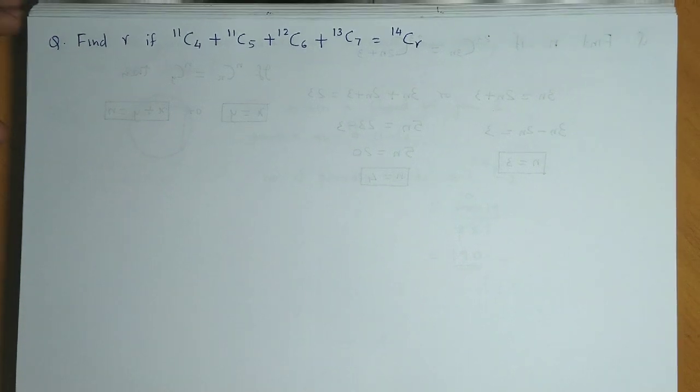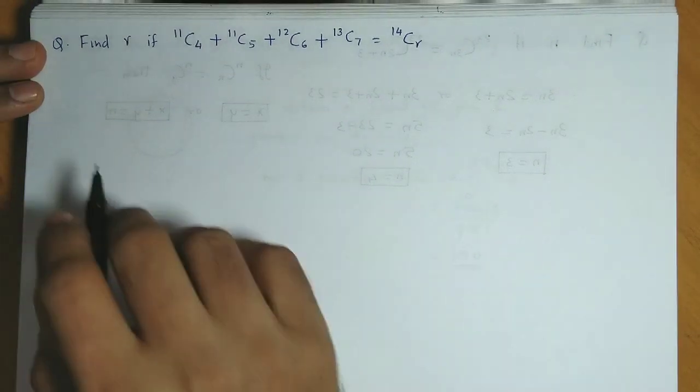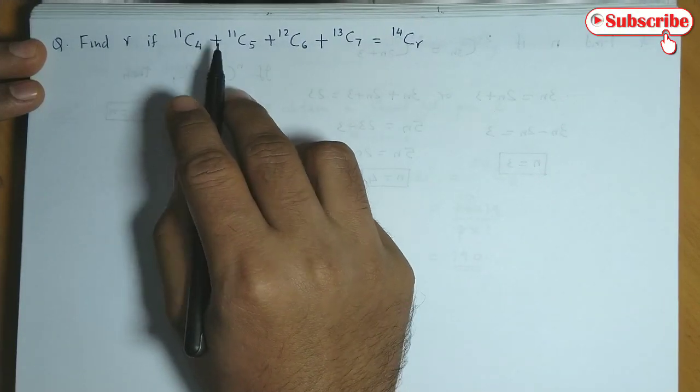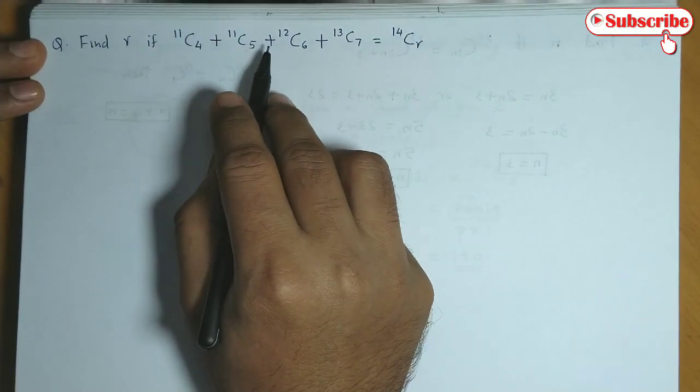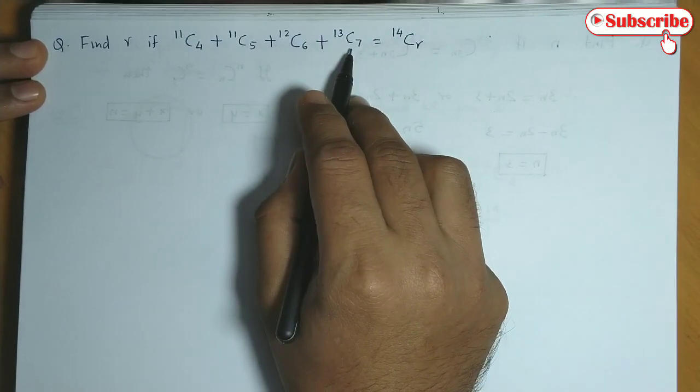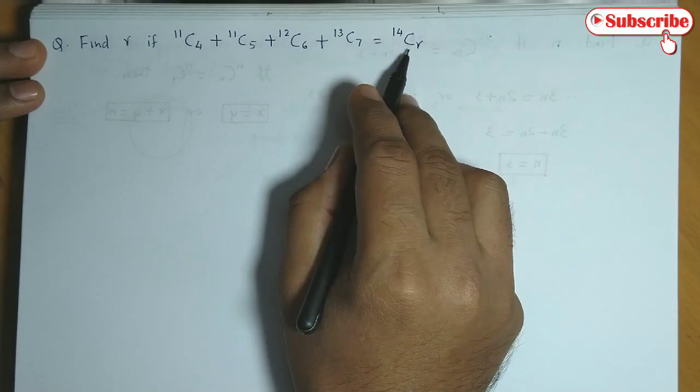We now take an example based on combination. Find R if 11C4 plus 11C5 plus 12C6 plus 13C7 is equal to 14CR.